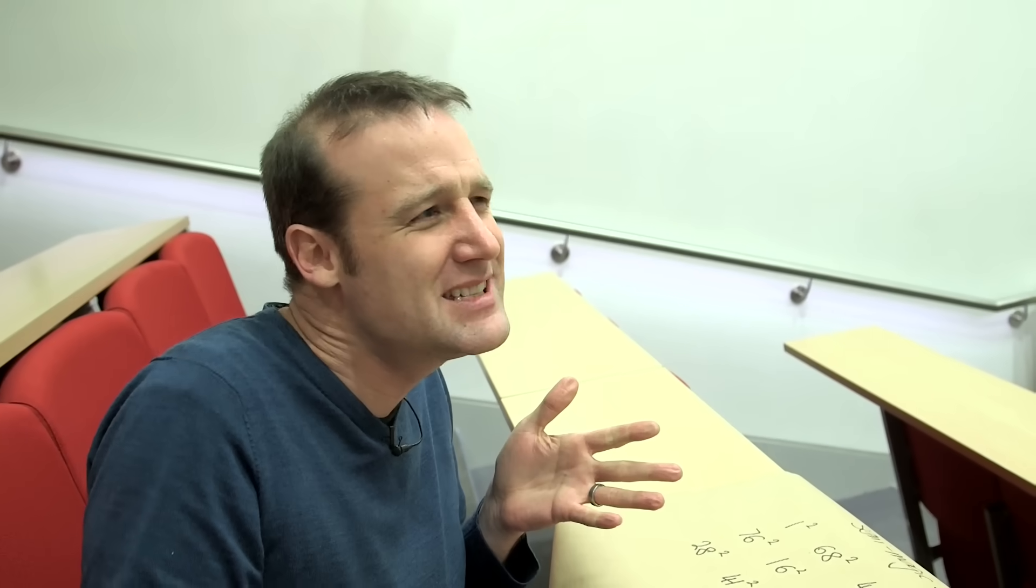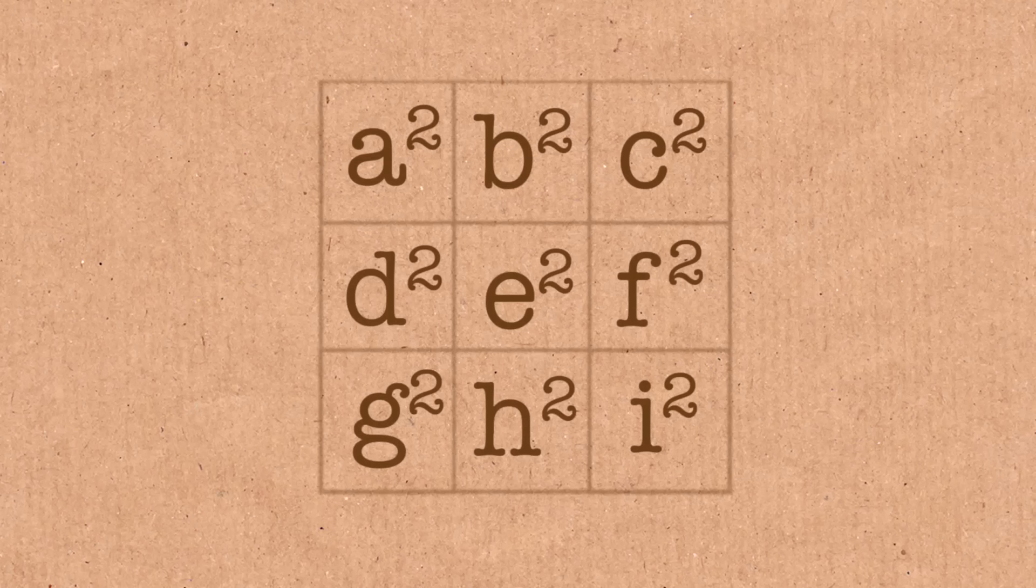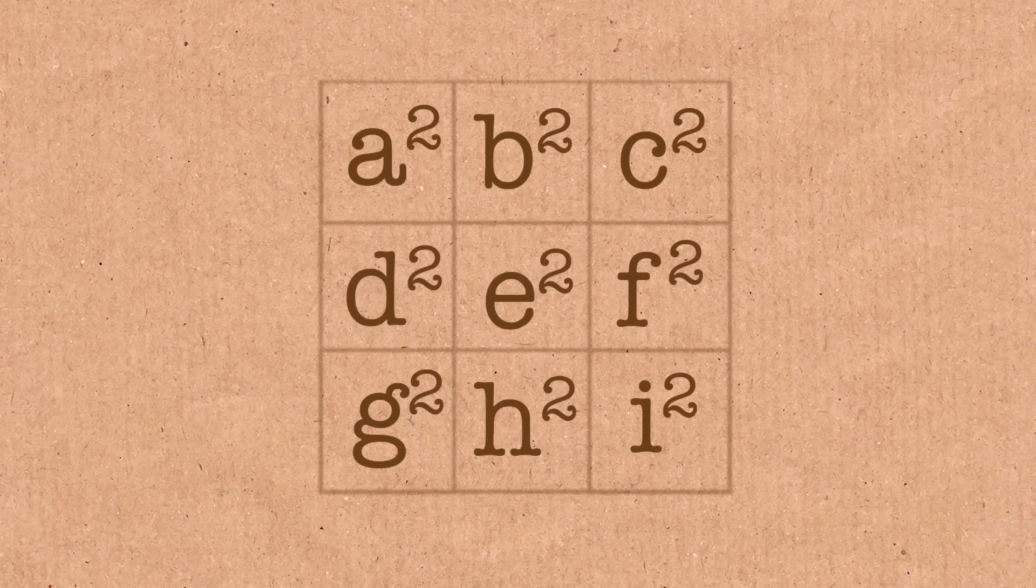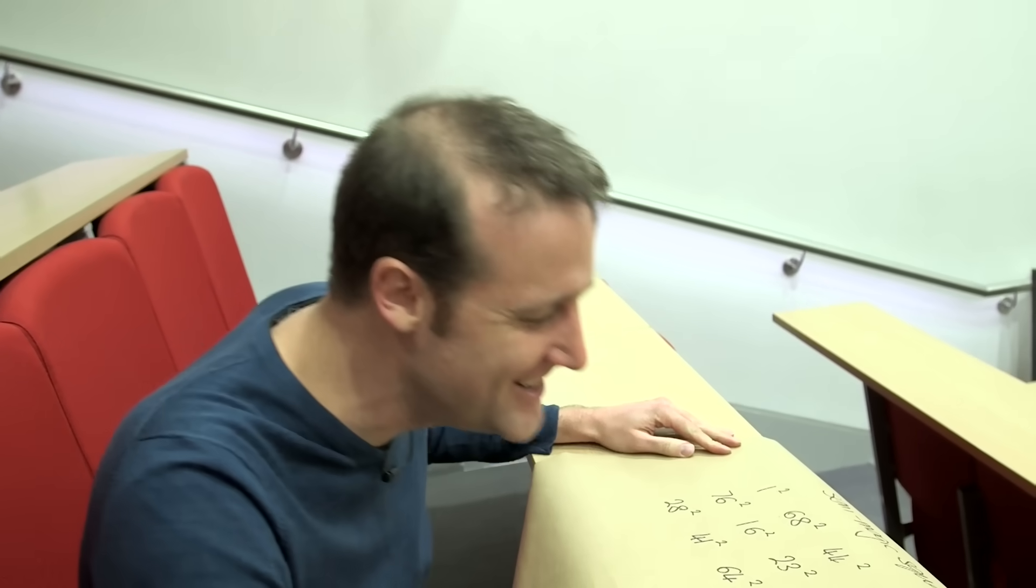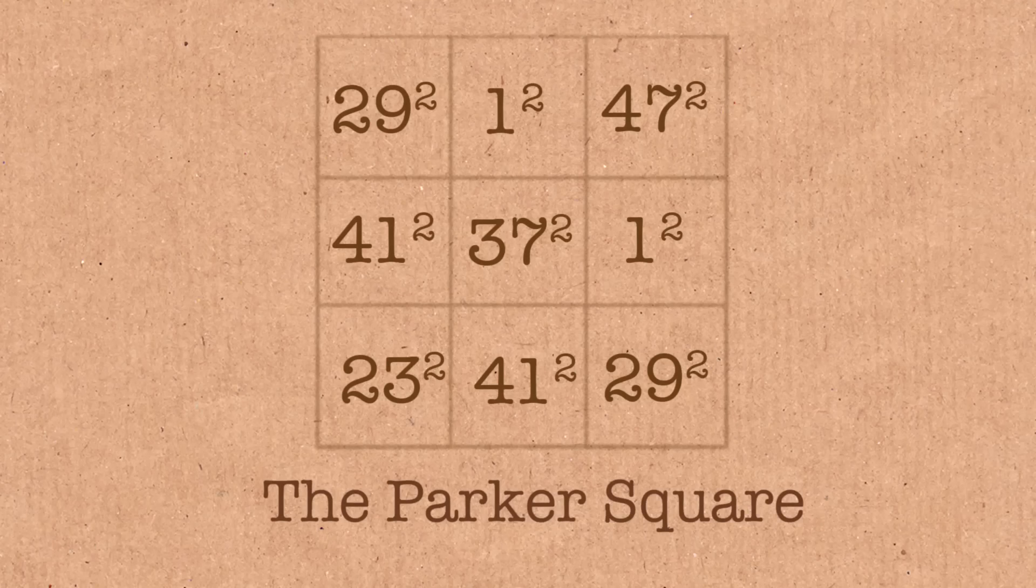You know what, maybe it'll become the mascot for giving things a go. People suspect one may exist or it may not. They can't rule it out, but it's generally agreed it's not achievable with our current computing power or our current number theory to be able to find one of these. But I gave it a go, and of course I didn't find it. I found this adequate...